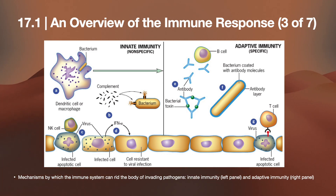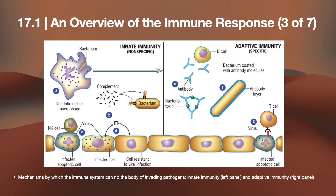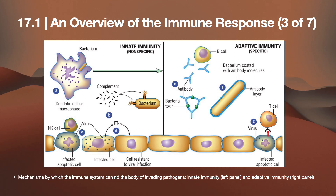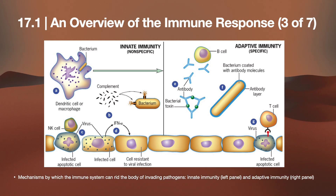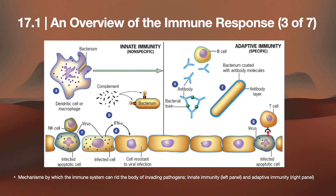The mechanisms by which your immune system eliminates invading pathogens are shown with innate immunity on the left panel and adaptive immunity on the right. A bacterium is engulfed by a dendritic cell or macrophage, releasing complement that attaches to the bacterium non-specifically. Natural killer cells attach to infected apoptotic cells and release IFN-alpha, making cells resistant to viral infection, leading toward memory T cells for specific infections.